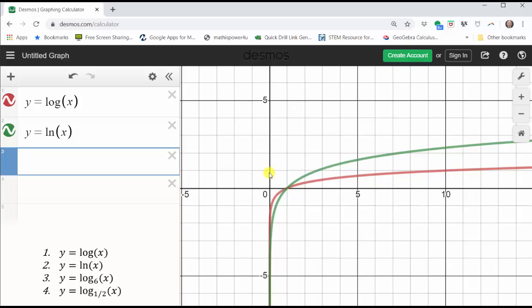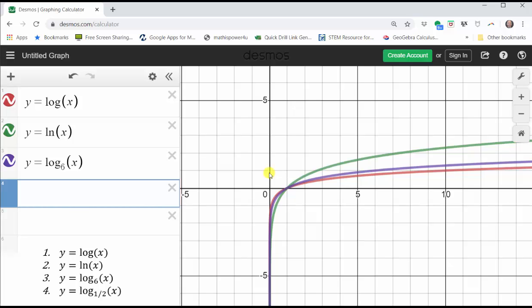Next, we have y equals log base six of x. We enter y equals log. To enter the base of six, we need to press underscore six. For underscore, we press shift dash, which is to the right of the zero. And then we enter the base of six, right arrow, took it out of the base position, and then we enter the x in parentheses. And enter, and again, the graph appears.